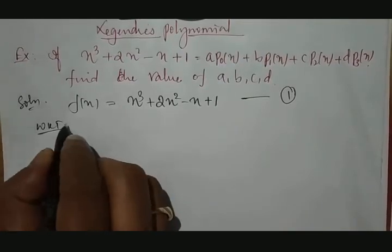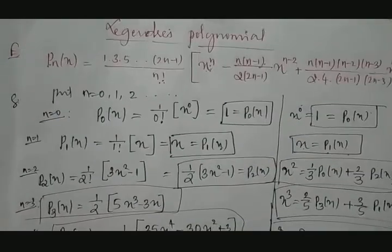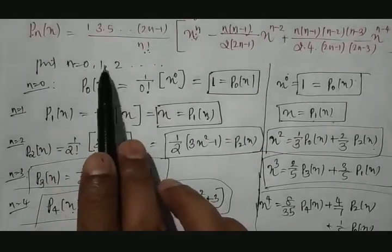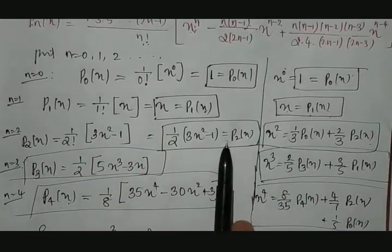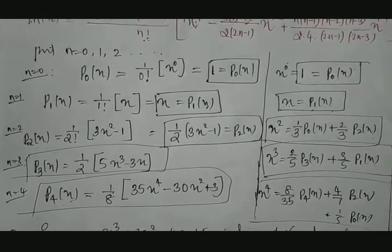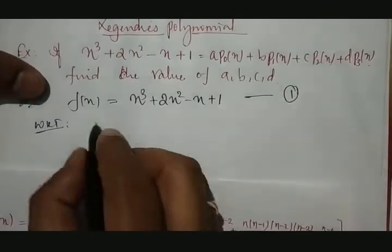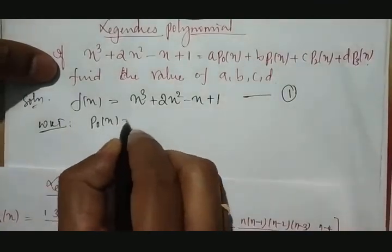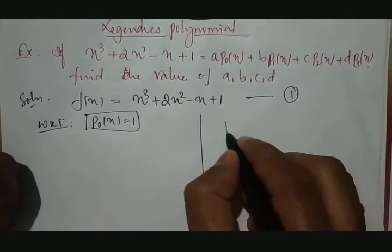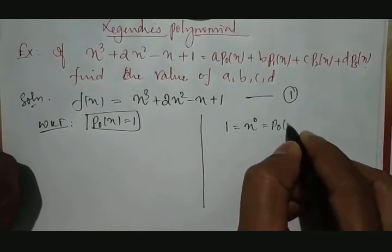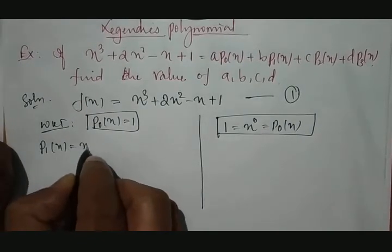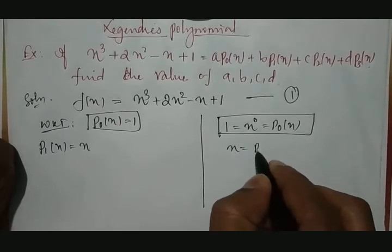We already discussed this in a previous class — we know how to get a result. This is the polynomial equation. In this, if you substitute the value of n equal to 0, 1, 2, 3 and so on, we get the corresponding results. And if you modify those results in terms of polynomial x, we get these results. Therefore, we know that P0(x) is equal to 1, which means 1 is nothing but x raised to 0, which is P0(x). Then P1(x) is equal to x, so x is equal to P1(x).